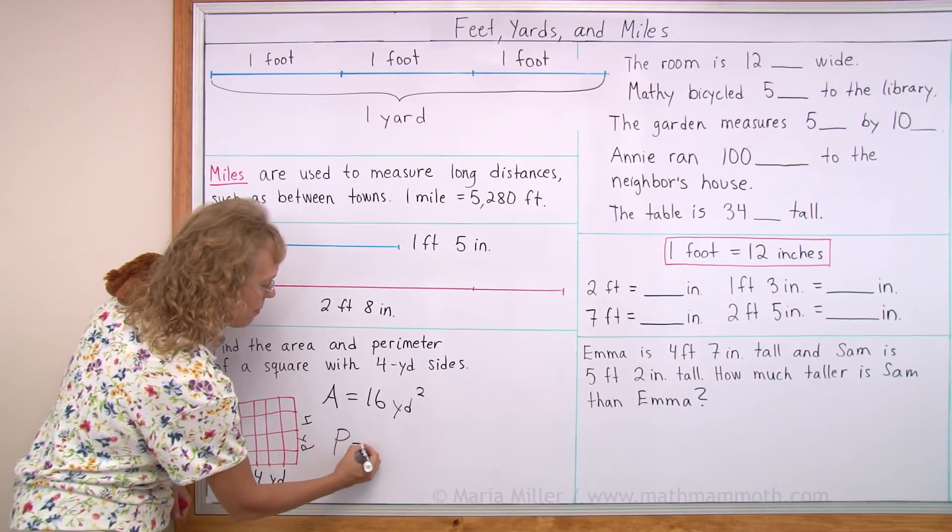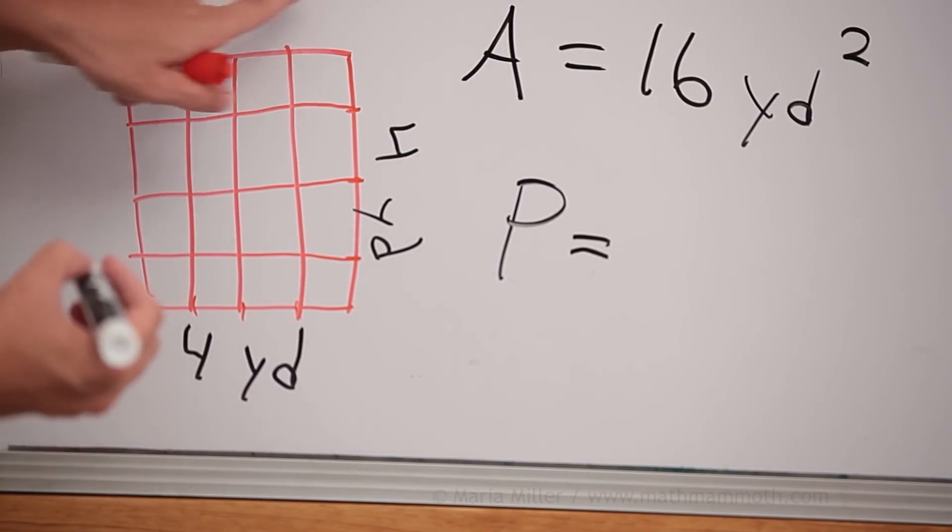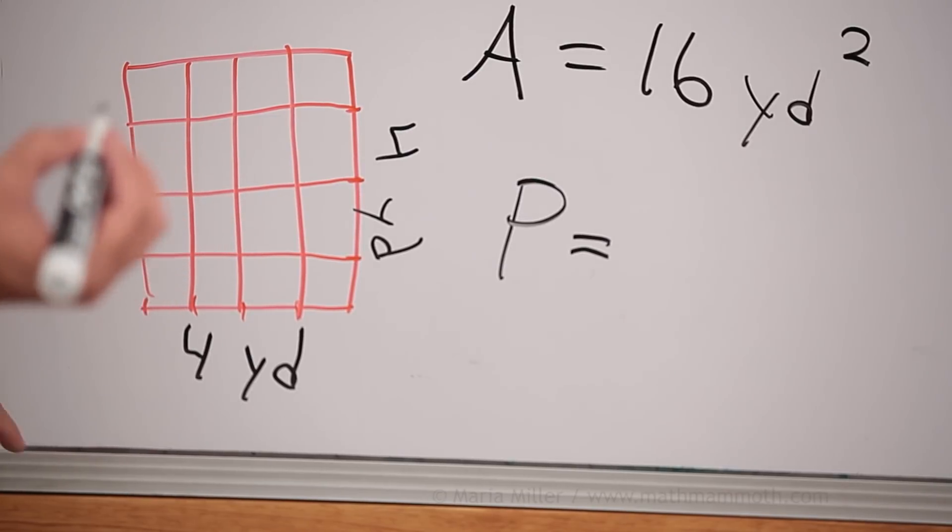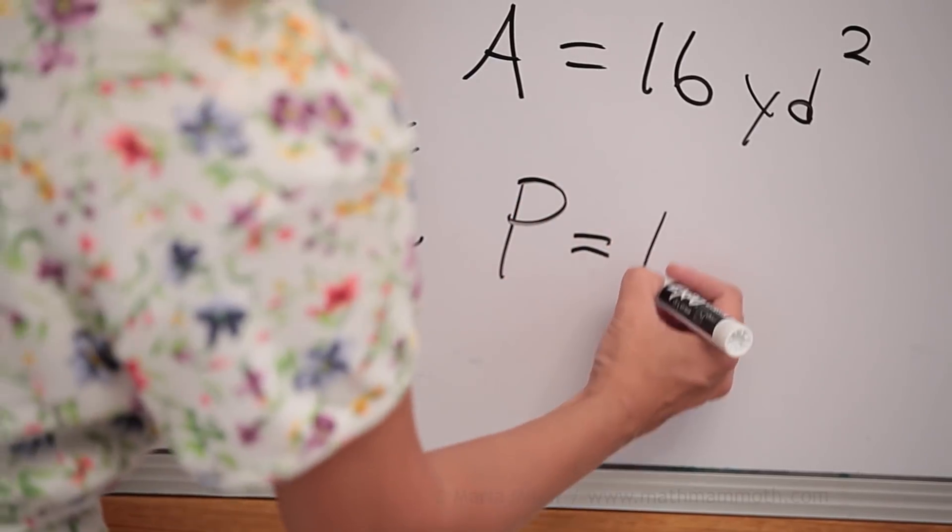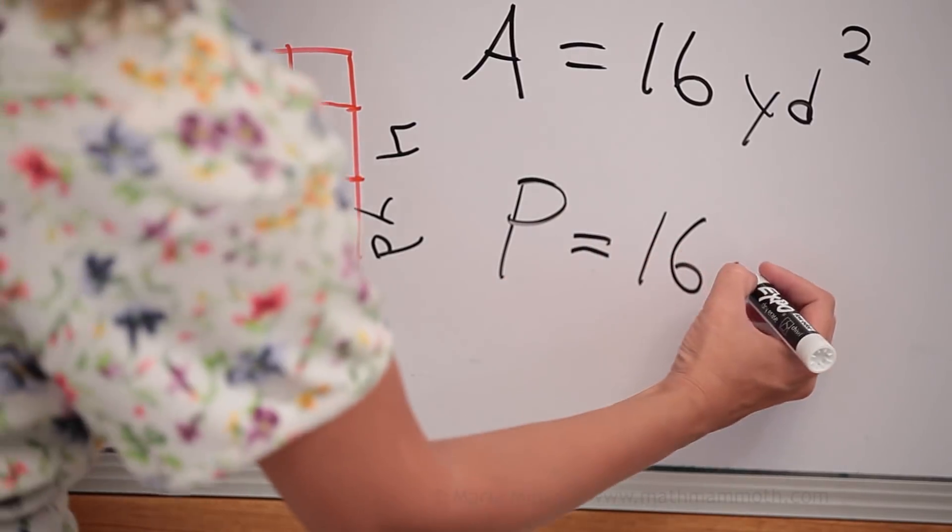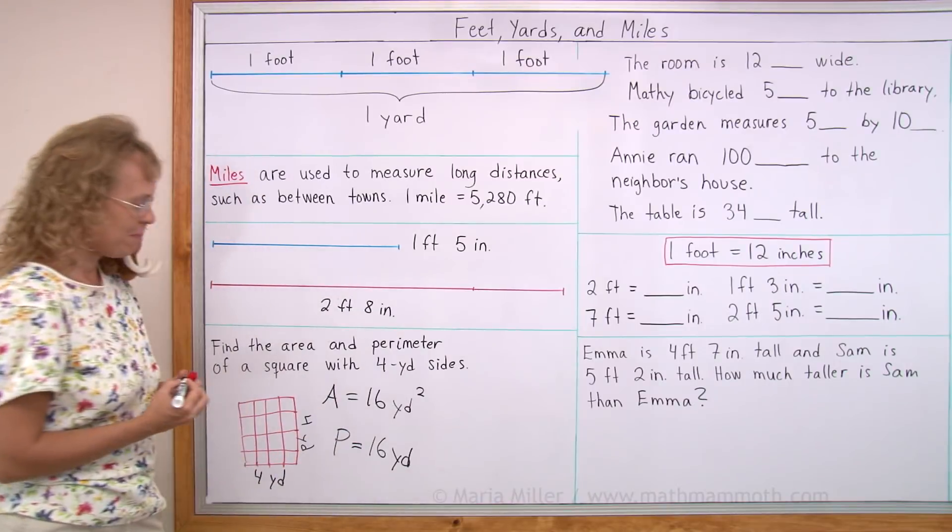And then the perimeter, you go around the figure, four and four and four and four. That's four times four, 16 too. But this time, what unit will we put here? The same as here, yards.